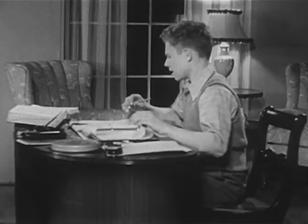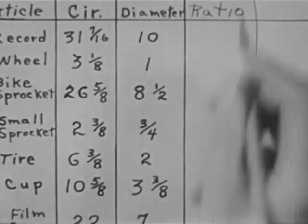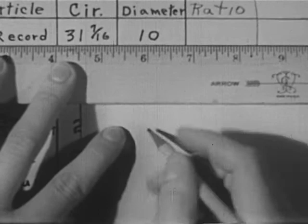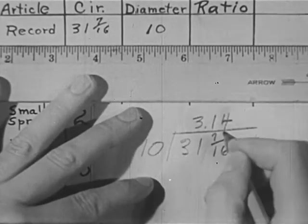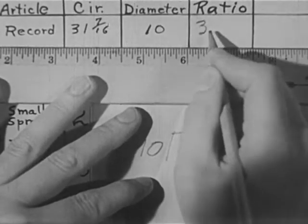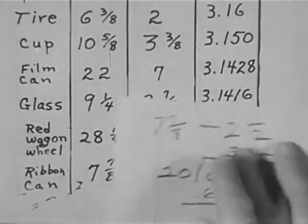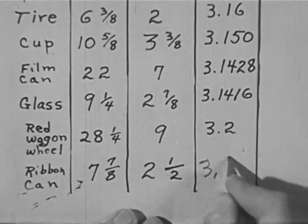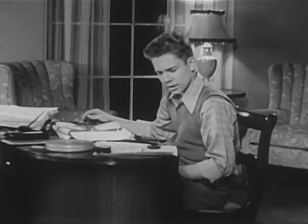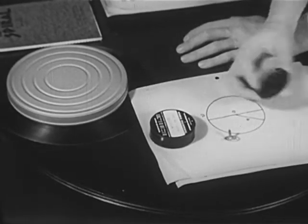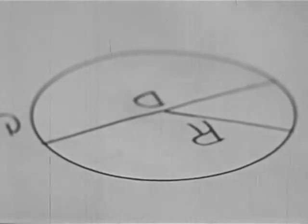Is that true of all circles? The three and a fraction diameters of any circle equal the circumference of that circle? Let's figure the ratio of those I've measured. Ratio of circumference to diameter: my first measurement was circumference thirty-one and seven-sixteenths inches, diameter ten inches — three point one four. They're all so nearly the same, every one of them. The circumference is a little more than three times the diameter.